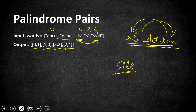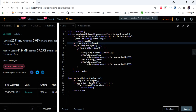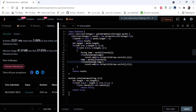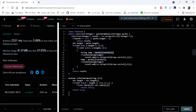The naive brute force solution is to combine each word with every other word in the list and check whether it forms a palindrome. If it does, we add those indexes to the result. This works in O(n² × k) time, where n is the number of words and k is the average length of each word. The code uses two for loops, appends both words to form a single string, and checks if it is a palindrome.